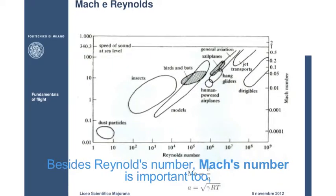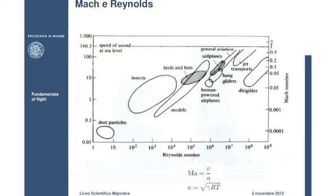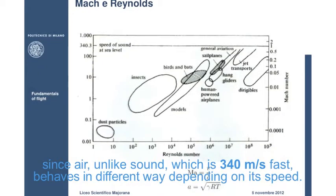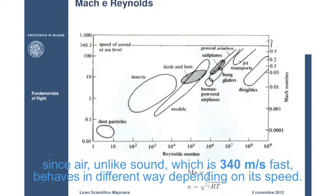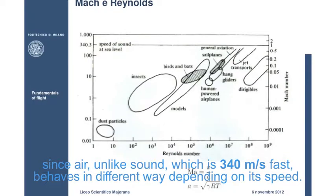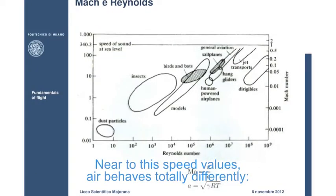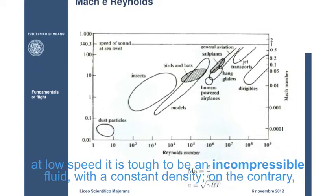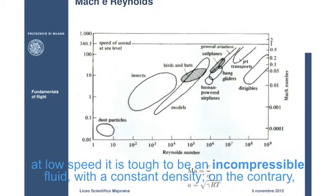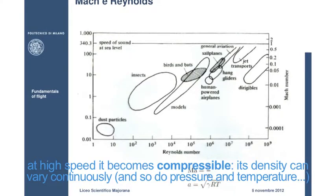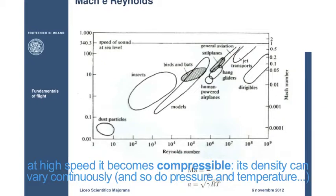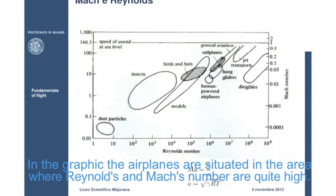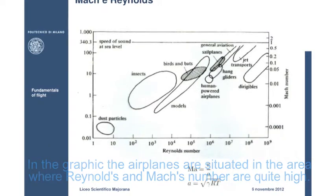Besides Reynolds number, Mach's number is important too, given by the ratio of the speed of the plane to the speed of sound. Since air, unlike sound, which is 340 meters per second fast, behaves in a different way, depending on its speed. Near to these speed values, air behaves totally differently. At low speed, it is thought to be an incompressible fluid, with a constant density. On the contrary, at high speed, it becomes compressible, that is, its density can vary continuously, and so do pressure and temperature. In the graphic, the airplanes are situated in the area where Reynolds and Mach's numbers are quite high.